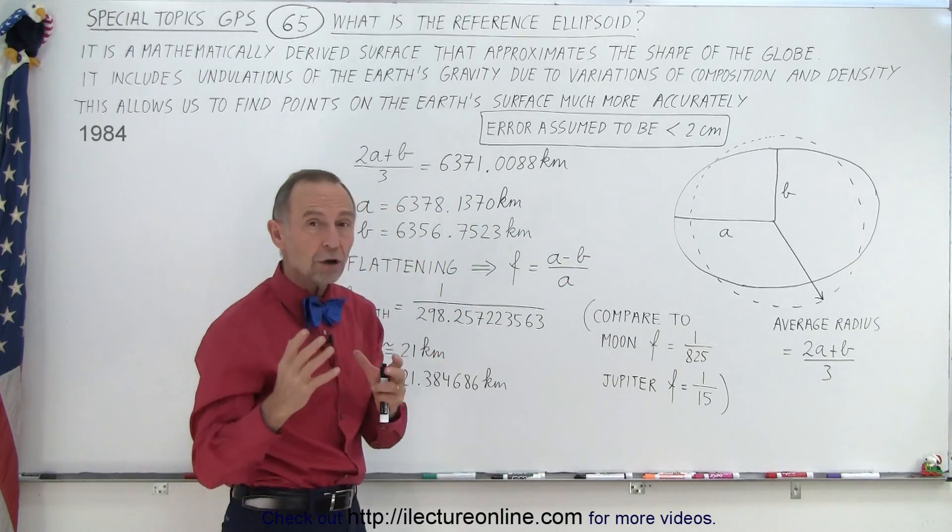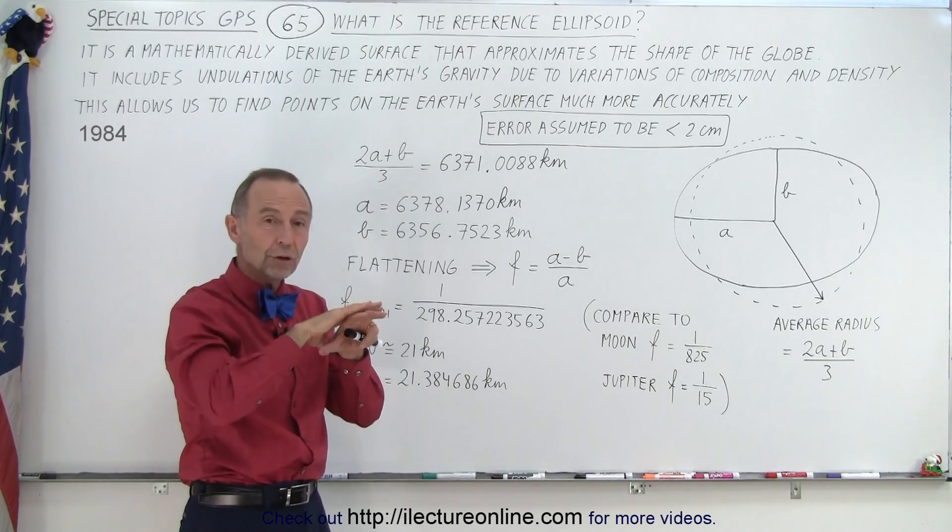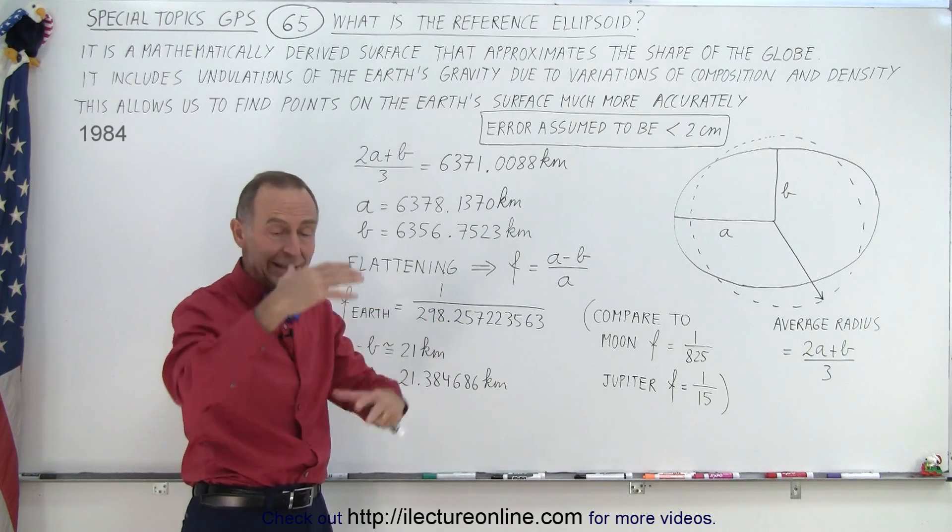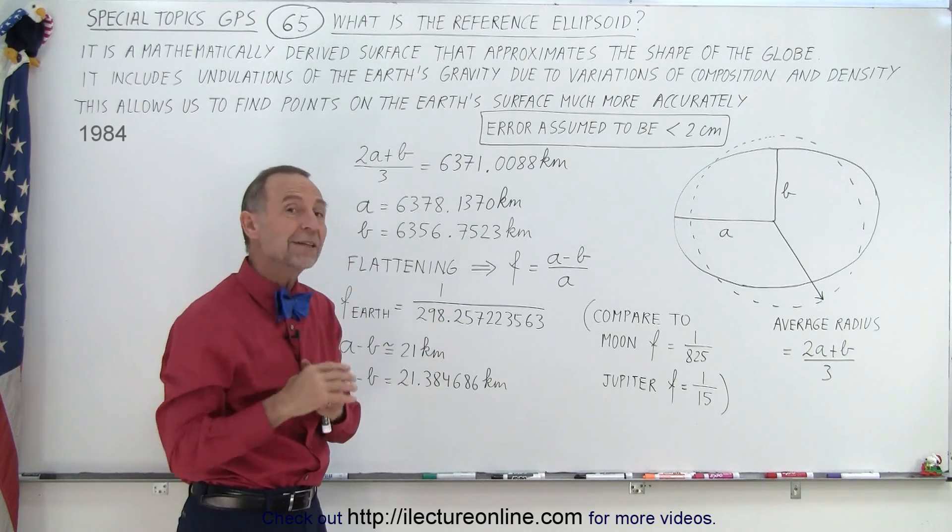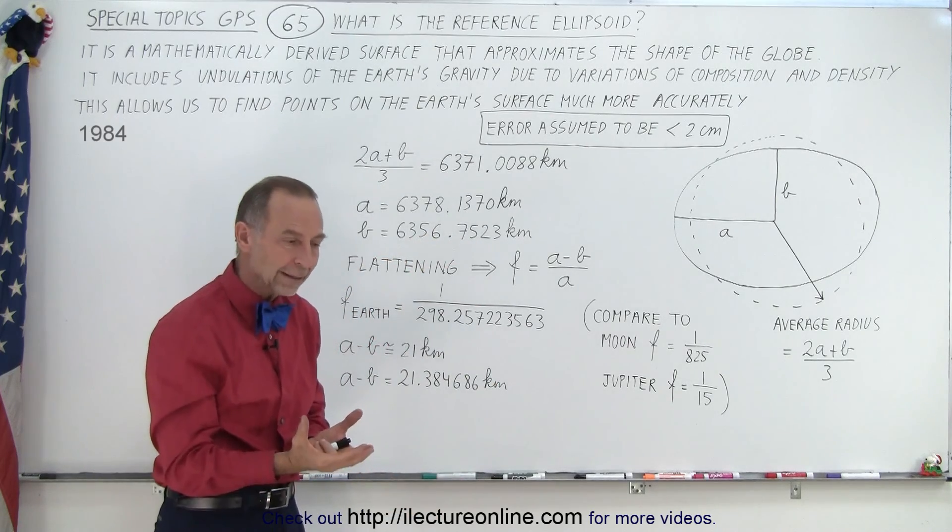Now it's not a smooth shape by any means because there's undulations that are caused by the gravitational changes as the satellites go over the Earth due to the change in the composition of the Earth's crust and the Earth's mantle and therefore the difference in gravitational force. And that's all thrown into the model.